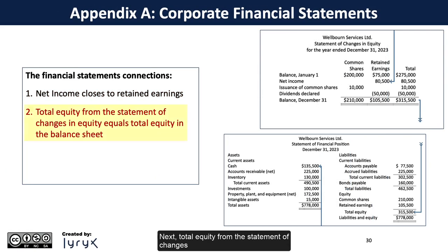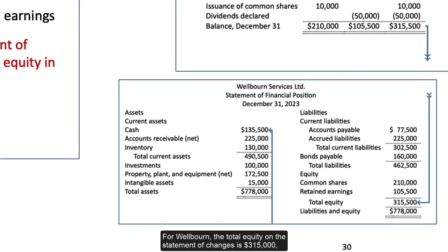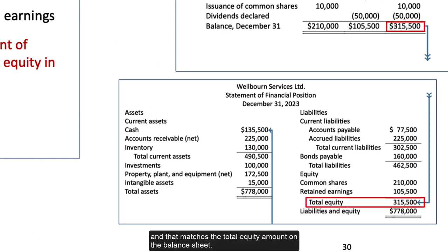Next, total equity from the statement of changes in equity equals total equity in the balance sheet. For Wellborn, the total equity on the statement of changes is $315,000 and that matches the total equity amount on the balance sheet.